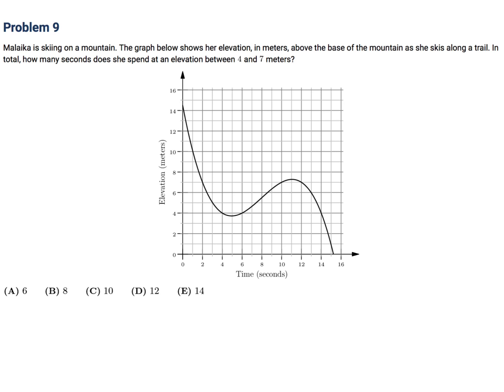Malaika is skiing on a mountain. The graph below shows her elevation in meters above the base of the mountain as she skis along a trail. In total, how many seconds does she spend at an elevation between four and seven meters? So we are only interested in four and seven meters. So this is the elevation right here. So here's four, and here is seven. So we are only interested in that. So it looks like she is there between this point and this point, and then between this point and that point, and then finally between that and that. So the first two looks like between two and four, so that's for two seconds. And then between six and ten, so that's four seconds. And then finally, it looks like between 12 and 14, which is another two seconds. So when you add these up, you get eight seconds. And that would be choice B.